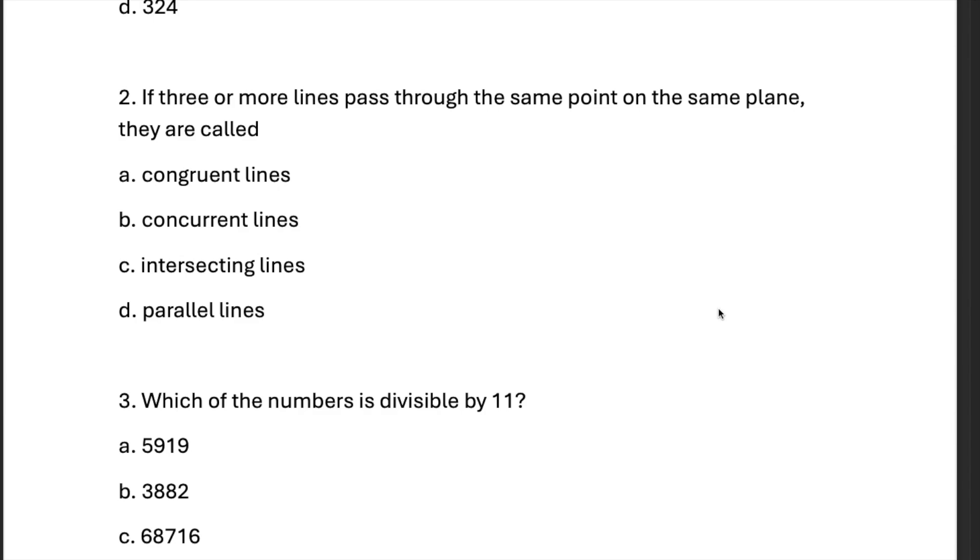If three or more lines pass through the same point on the same plane, they are called concurrent lines.